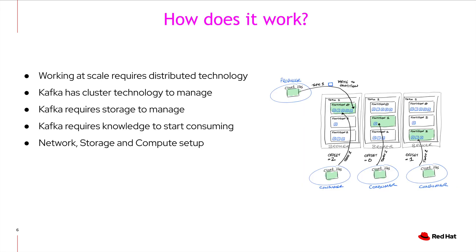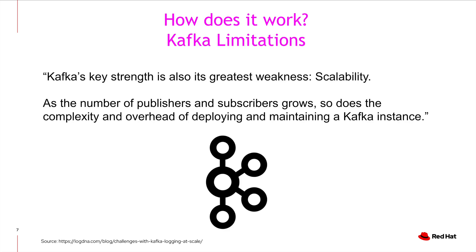So how does it work? As with any application running at scale, Kafka requires a significant amount of preparation and customization at the network, hardware, OS, and application level. Kafka's performance and stability depends heavily on RAM capacity, disk throughput, file system tuning, and network latency. It also currently relies on Apache ZooKeeper, which you need to deploy separately from Kafka to avoid a single point of failure. The limitation is also its greatest weakness: as the number of publishers and subscribers grow, so does the complexity and overhead of deploying and maintaining a Kafka instance.